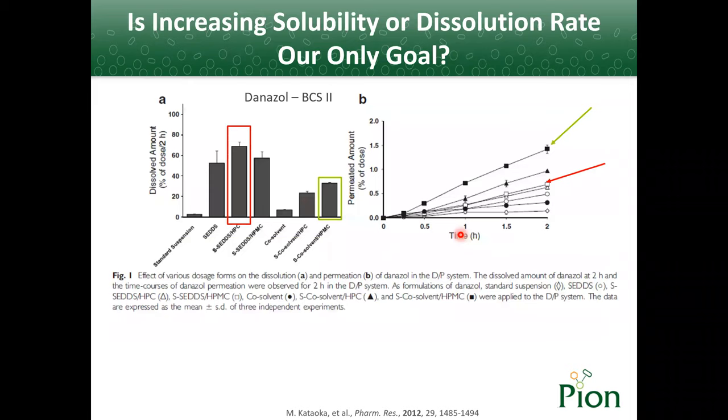How to increase the solubility or dissolution rate? That's the key question in most people's mind. However, is increasing solubility or dissolution rate our only goal? Here is an example. On the left is the percent dissolved amount of different danazole formulations in two hours. We can see the HPC formulation in red dissolves the most, about 70 percent, and HPMC formulation in green dissolved about half. However, on the right side we can see the permeation results were different or reversed—the green one has much higher permeated amount than the red one. Thus, high dissolution rate does not necessarily mean high absorption or permeation.